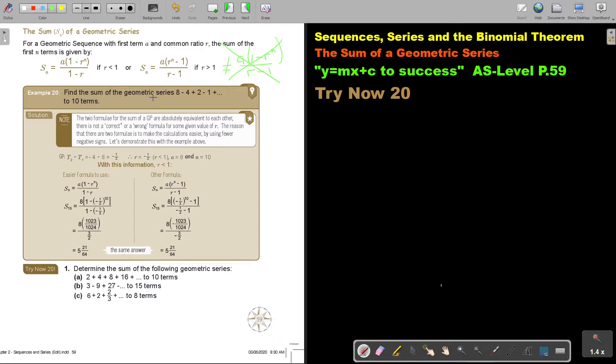So find the sum of the geometric series, 8 minus 4 plus 2, to 10 terms. So the sum to 10 terms.